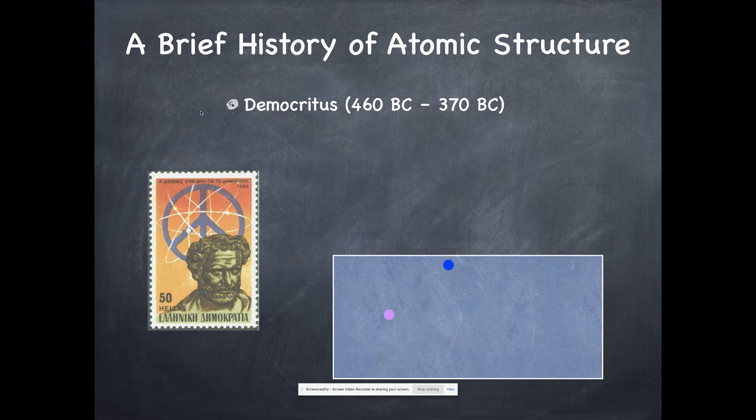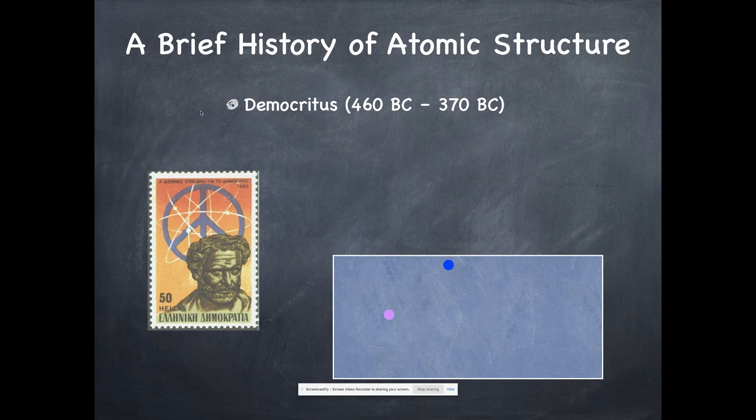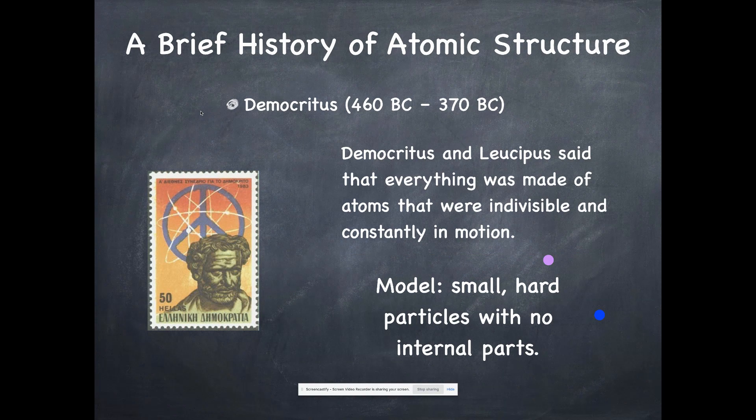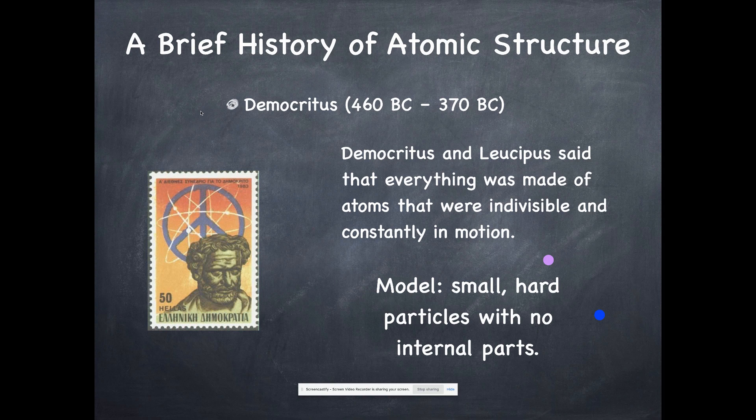We begin with Democritus, shown on this stamp from Greece. He was alive 2000 plus years ago and is the first recorded person saying that atoms were indivisible and constantly in motion, that all stuff is made up of smaller particles. He makes reference in his writings to a guy named Lysipius, so that could have even been before him. Democritus' model of the atom is a small, hard particle with no internal parts.